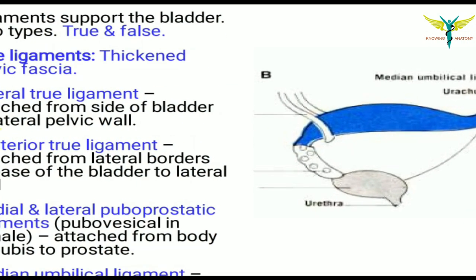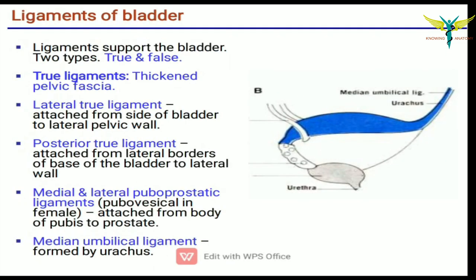The lateral true ligament is attached from the sides of the bladder to the lateral pelvic wall. The posterior true ligaments are attached from the lateral borders of the base to the lateral wall. The medial and lateral puboprostatic ligaments are attached from the body of the pubis to the prostate, and are present only in males.